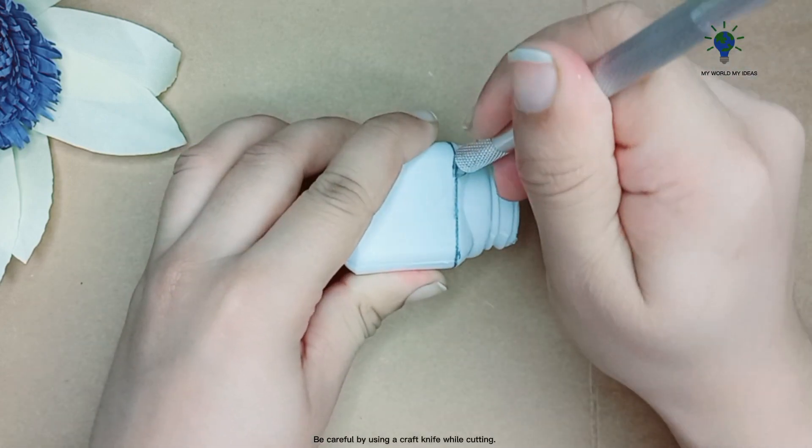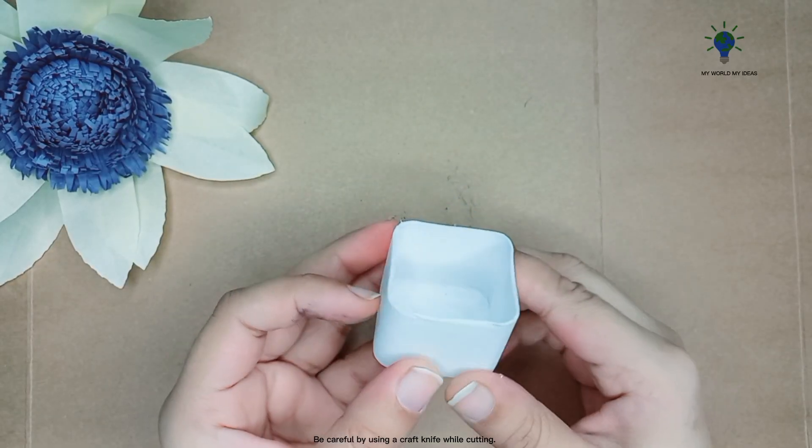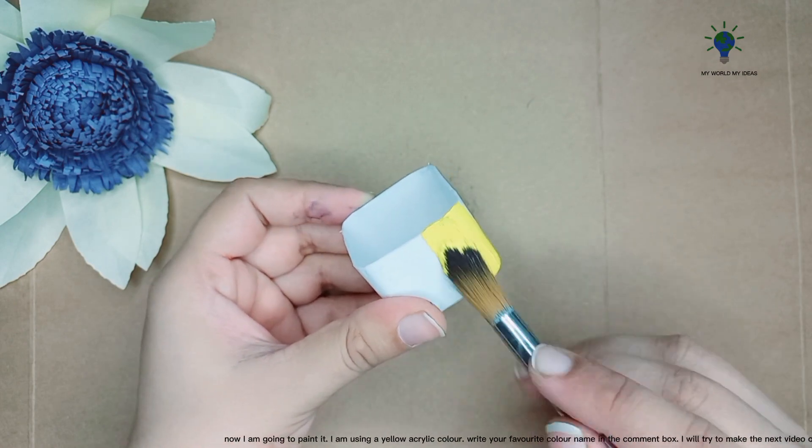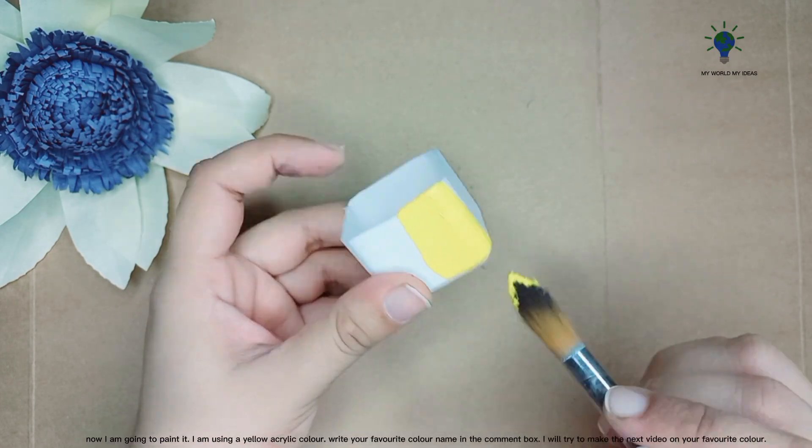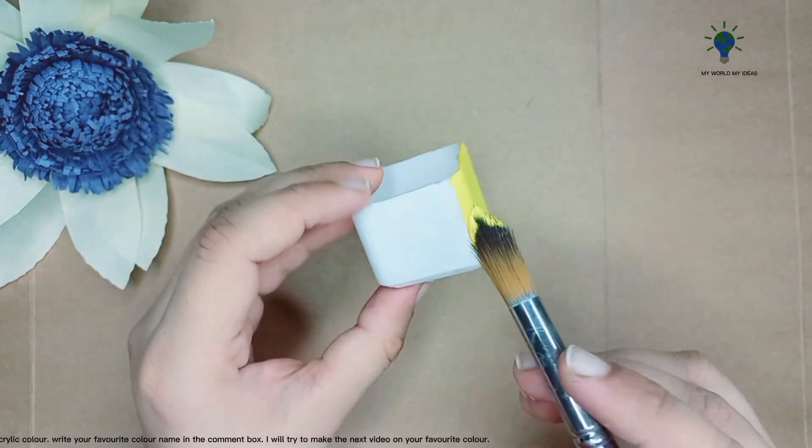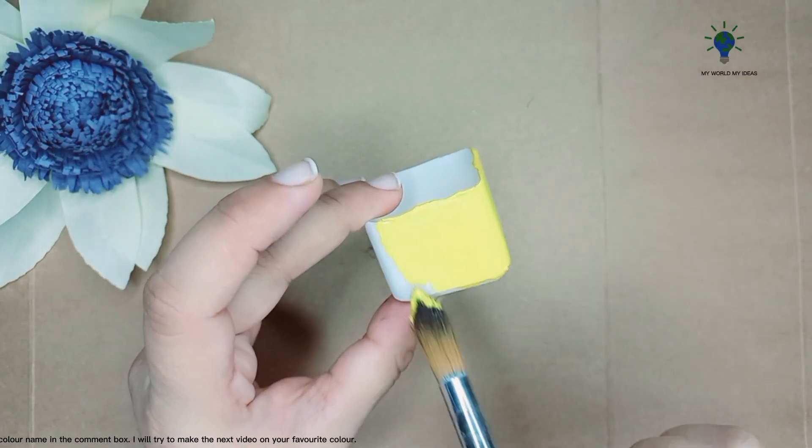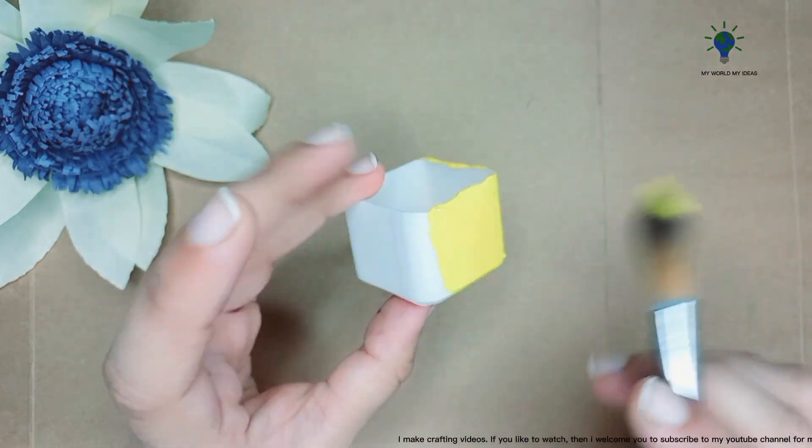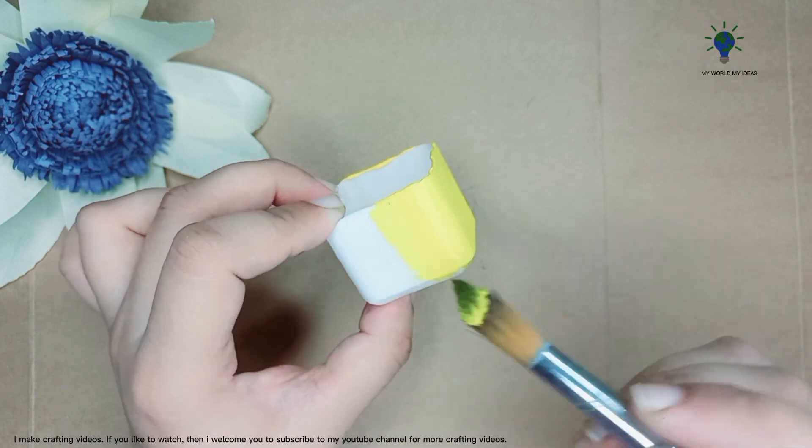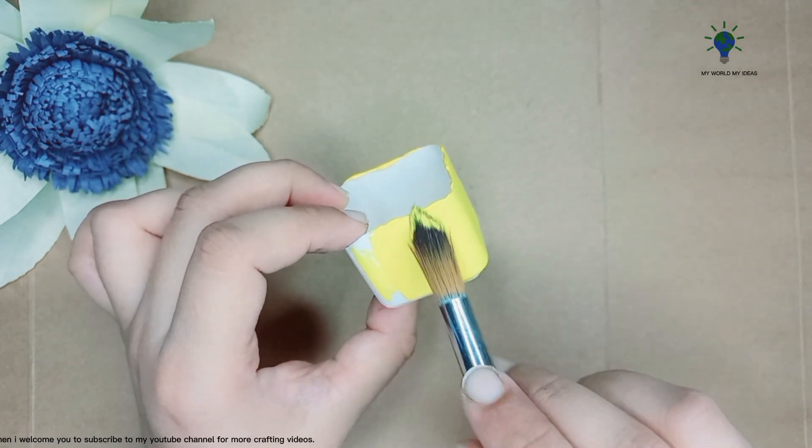Be careful using a craft knife while cutting. Now I am going to paint it. I am using a yellow acrylic color. Write your favorite color name in the comment box. I will try to make the next video on your favorite color. I make crafting videos. If you like to watch, then I welcome you to subscribe to my YouTube channel for more crafting videos.